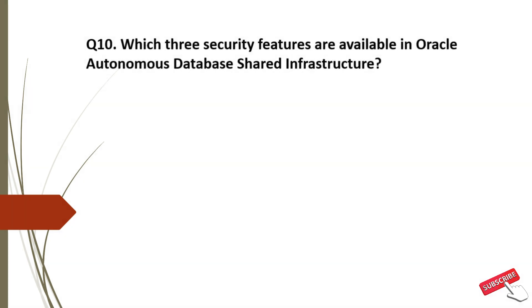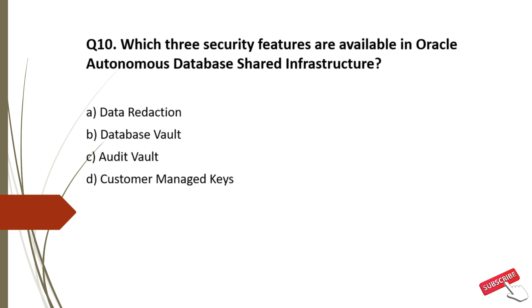Question 10: Which three security features are available in Oracle Autonomous Database Shared Infrastructure? Options: A. Data Reduction, B. Database Vault, C. Audit Vault, D. Customer Managed Keys, E. Transparent Data Encryption.